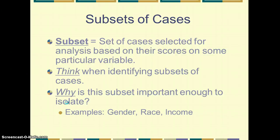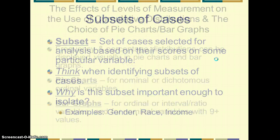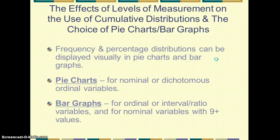We also can think about subsets of cases. A subset is a set of cases selected for analysis based on their scores on some particular variable. So we want to think when we're identifying subsets of cases, why is this subset important enough to isolate? And some of those subsets might be gender or race or income. So when we're looking at our number of times we use the computer each day, would it be interesting if instead of just counting up everybody, we separated it into racial categories, or we separated it into gender categories, or we separated it into income or SES categories? Maybe that would tell us something that we wanted to know.